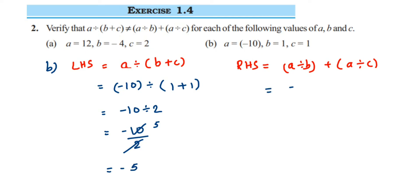So it will be -10÷1 plus -10÷1, which is equal to -10 + (-10). Now you're adding integers with the same sign, that is negative. Both integers have the same sign - negative sign. So same sign means we have to do addition.